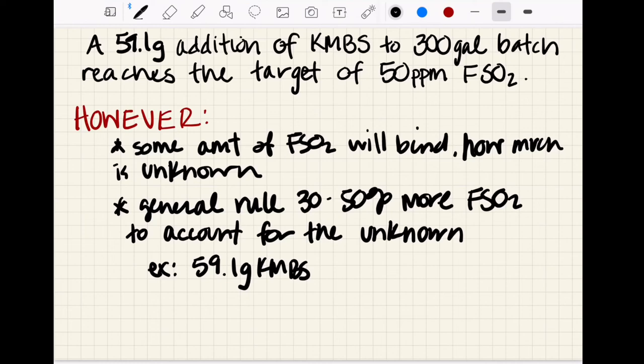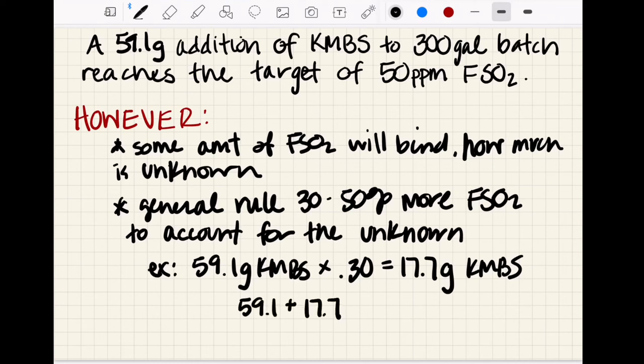If we do that here in our example, we're going to add 30 percent more. We can take 59.1 multiply it by 0.3, that will give us 17.7 grams additional KMBS to add. Then we add 59.1 plus 17.7, and we end up with a total addition of 76.8 grams KMBS to add to our 300 gallon batch of wine.